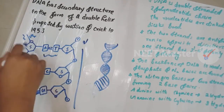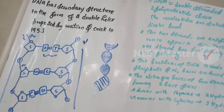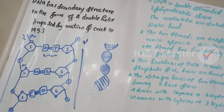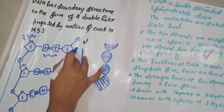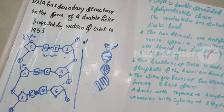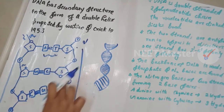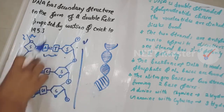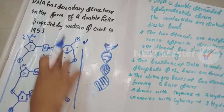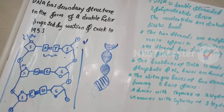DNA consists of two strands of polynucleotides. A nucleotide is made up of one sugar, one nitrogenous base, and one phosphate group. These polynucleotides make up the structure of our DNA.